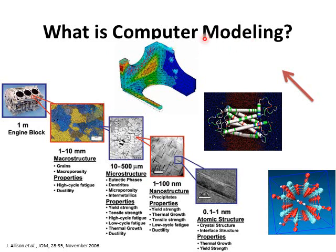What is computer modeling? Computer modeling is to use computers to model devices and materials. For example, we can model an engine block for a car. We can also model materials on macroscale, microscale, nanoscale, and atomic scales using computers in order to predict the structures, properties, and the performance of these materials.